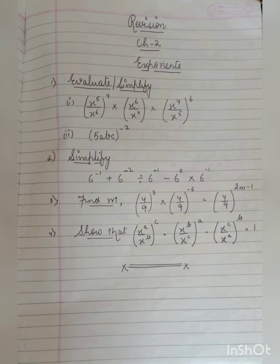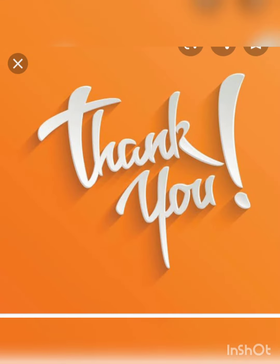Number four, show that X to the power A upon X to the power B to a common power C into X to the power B upon X to the power C to a common power A into X to the power C upon X to the power A common power B is equal to 1. Thank you.